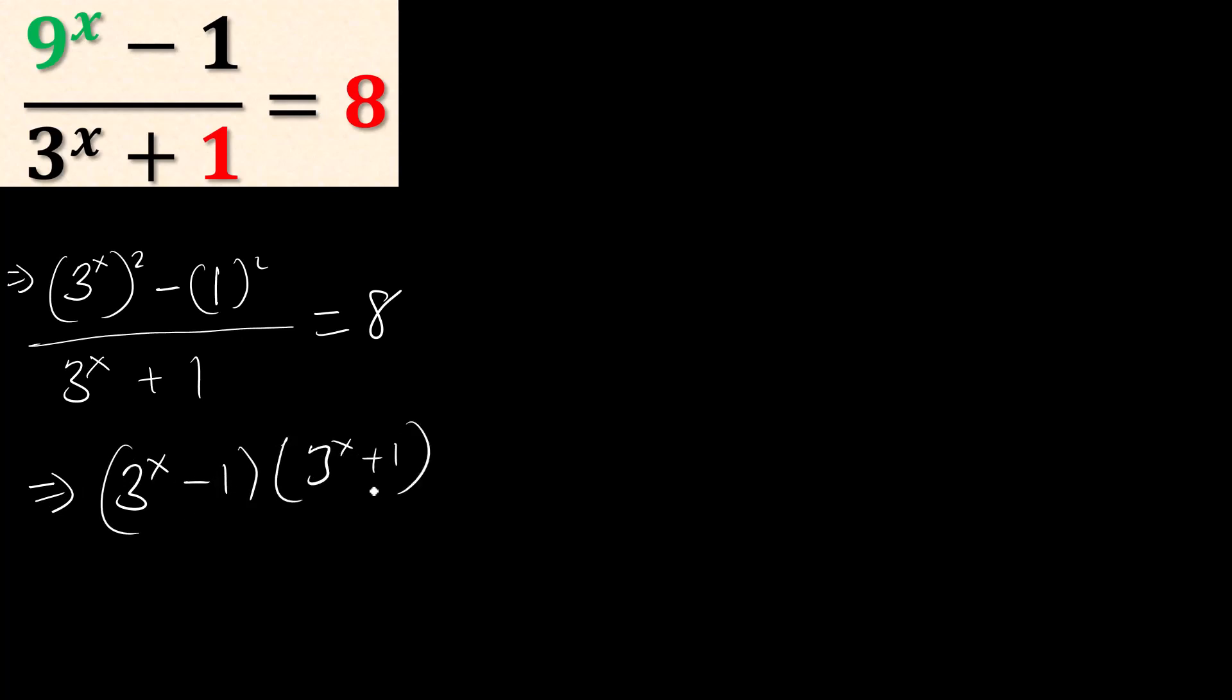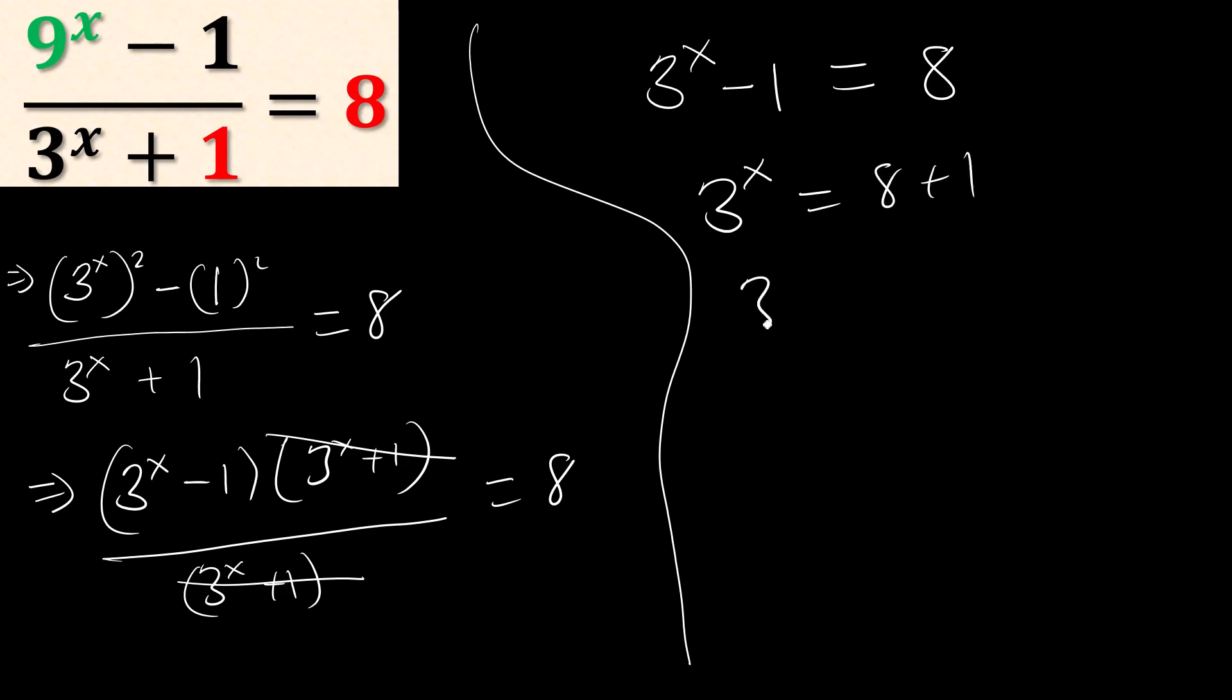So the numerator will be (3^x - 1)(3^x + 1) over 3^x plus 1. Guess what? Now this 3^x + 1 cancels with this 3^x + 1.